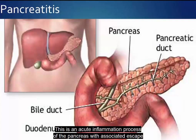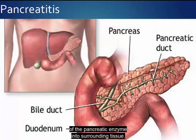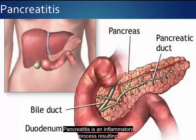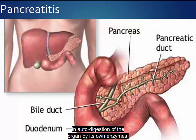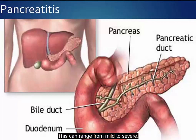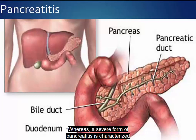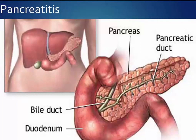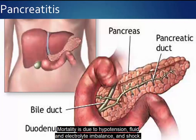Next is pancreatitis. This is an acute inflammation process of the pancreas with associated escape of pancreatic enzymes into surrounding tissue. Pancreatitis is an inflammatory process resulting in autodigestion of the organ by its own enzymes. This can range from mild to severe, where a severe form is characterized by diffusely bleeding pancreatic tissue, fibrosis, and death. Mortality is due to hypotension, fluid and electrolyte imbalance, and shock.